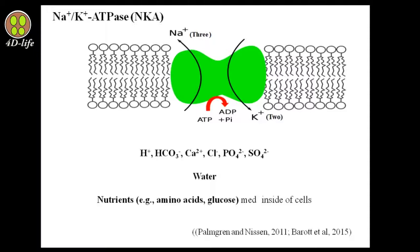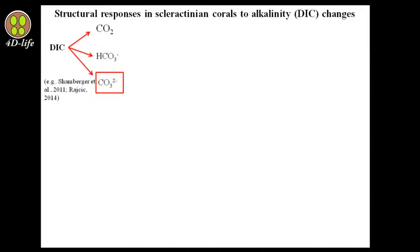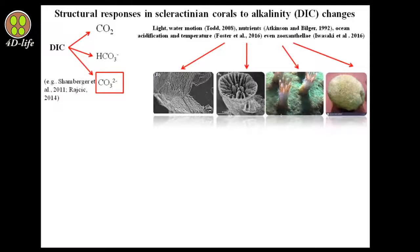Among the three components of alkalinity, only carbonate has a positive effect on coral calcification, while increases in bicarbonate and CO2 have a negative effect. Research has demonstrated that all environmental parameters affect the formation and growth of calcium carbonate structures in scleractinian corals. Light, water motion, nutrients, alkalinity, and temperature all influence coral polyps, the morphological form of coral, and even colony form.